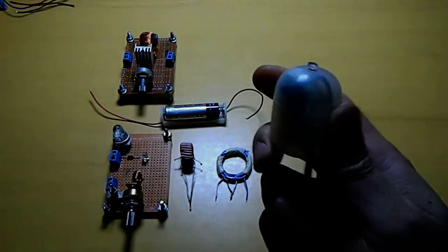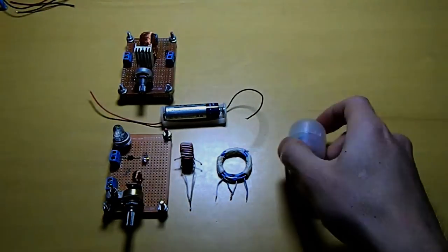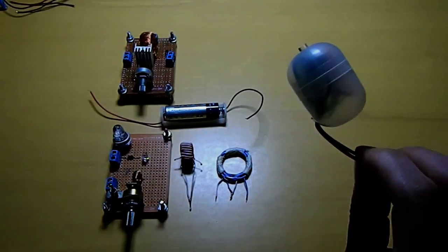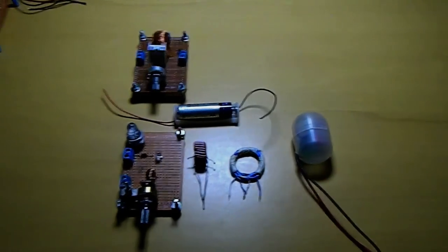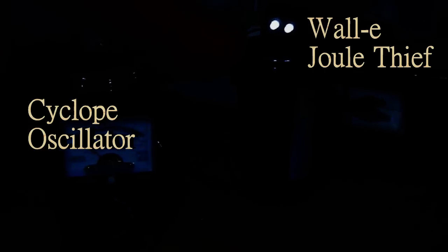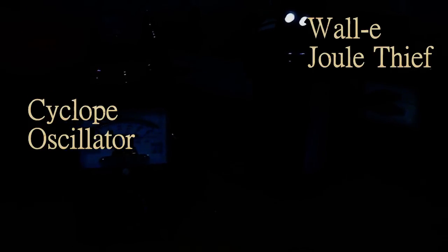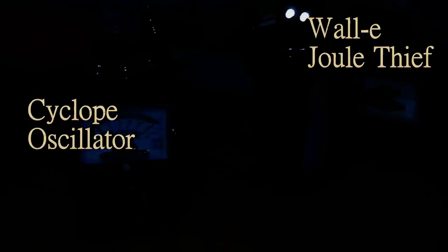Here is the second version of the cyclope. This is just an oscillator. The other one there, the two lights, that guy is a Joule thief. This guy here is a Joule thief. It is Wally. And this guy here is an air coil oscillator. Here is the cyclope.